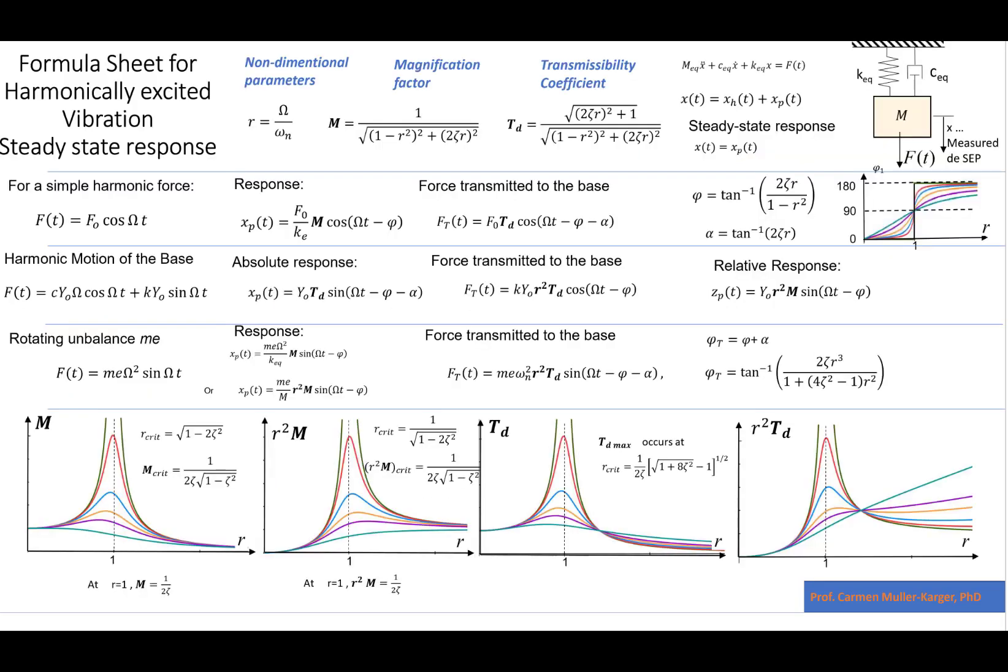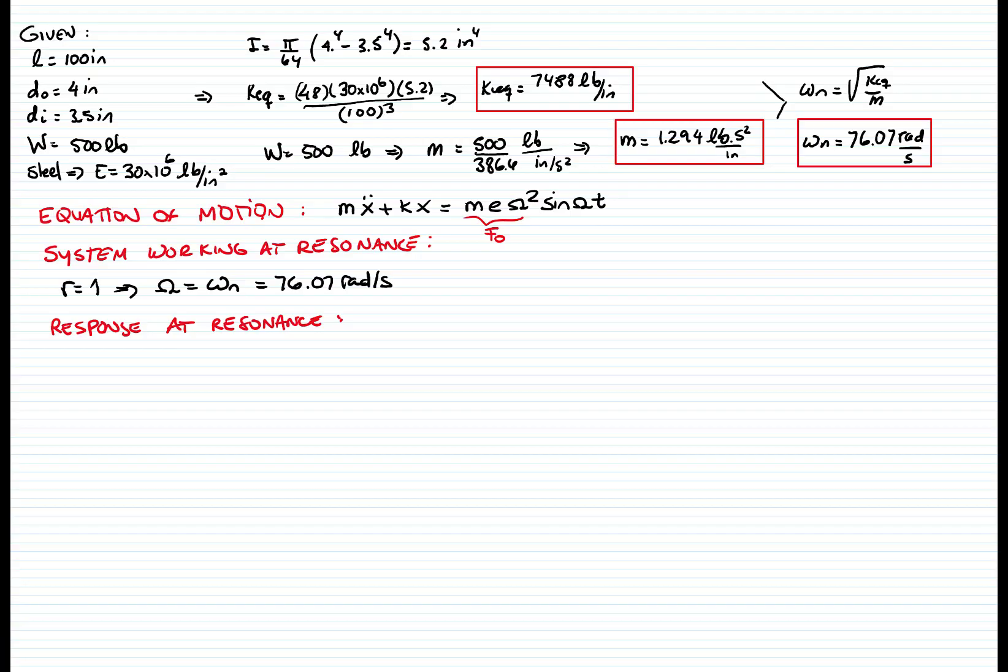And the specific case is the rotating imbalance. And as you recall, in the next page, we can see the force for a rotating imbalance. F sub 0 becomes m e omega squared. And the response is the one for resonance. So let's write that down.